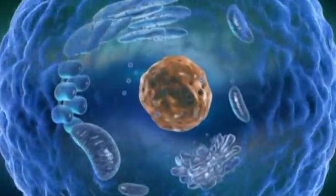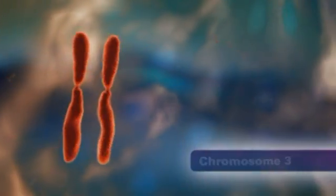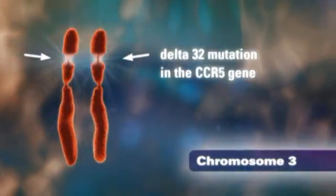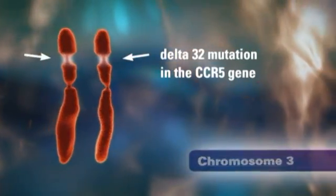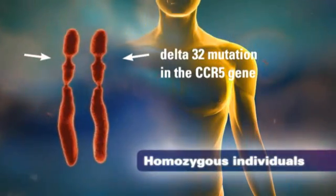The rationale for targeting viral entry as a novel approach to HIV therapy arose from the discovery of a commonly occurring CCR5 mutation known as Delta 32 on chromosome 3. Delta 32 homozygous individuals who have two copies of the Delta 32 mutation and therefore lack functional CCR5 co-receptors are highly resistant to HIV-1 infection.